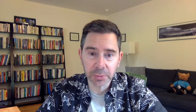Although there are many different kinds of qualitative methods, all of them rely on the same five steps. They all require the collection of verbal data — interviewing participants and getting their stories. They all involve reading the data in some kind of systematic way, then breaking the data into parts. The data is organized and expressed from a disciplinary perspective, and finally synthesized or summarized in some kind of meaningful way.